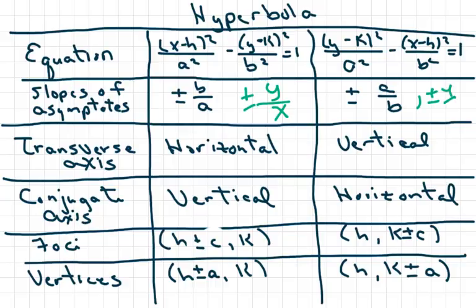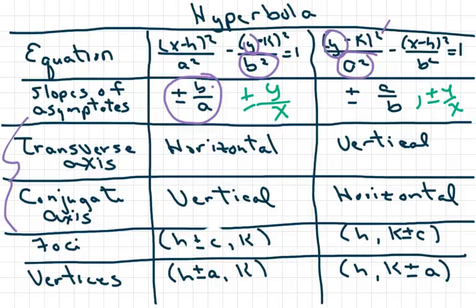You don't have to memorize the asymptote slopes because if you notice, what's under the y is b, so b is on top. A is under the x, and that's the main reason you need to know those in case they give you a problem involving the transverse or conjugate axis. The foci and vertices are also very important.